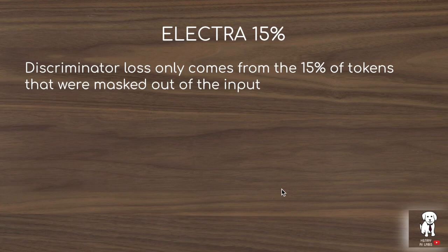In the replace token detection pipeline, the input sequence is masked at 15%, passed through the generator to get a new sequence, then the discriminator classifies each token as original or replaced. In the ELECTRA-15% setting, we only define the loss on the 15% of the sequence that was originally masked before passing through the generator.